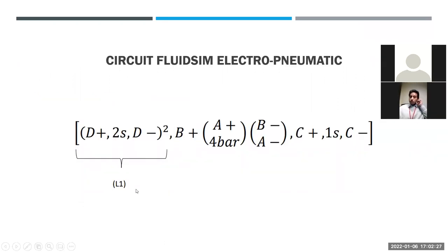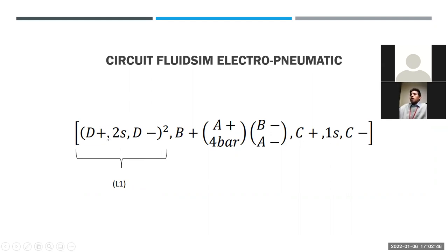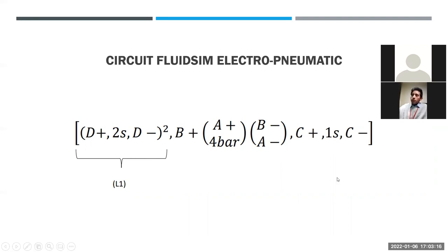Today I will speak about the circuit you can see on the screen — this will be for the electroneumatic sequence. There are three sequences: D goes forward, stays for two seconds, then goes back. D repeats twice. After that, B and A go forward with full bar pressure, then B and A return at the same time. Finally, C moves forward, holds for one second, then returns. This sequence repeats every single time because it's a repetitive sequence.